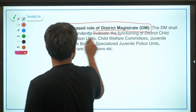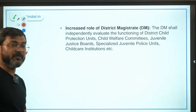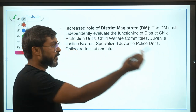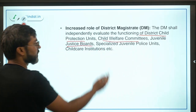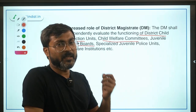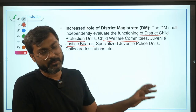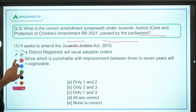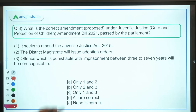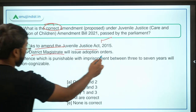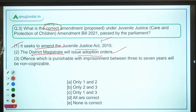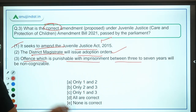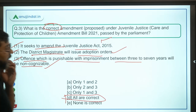The overall theme of these amendments is the increased role of the District Magistrate. The DM will evaluate the functioning of District Child Protection Units, Child Welfare Committees, and Juvenile Justice Boards — all units related to juvenile justice. Coming back to the question: statement one — it amends the Juvenile Justice Act of 2015 — correct. Statement two — the DM will issue adoption orders — correct. Statement three — offenses with imprisonment between three to seven years will be non-cognizable — correct. All statements are correct, so option D is the answer.